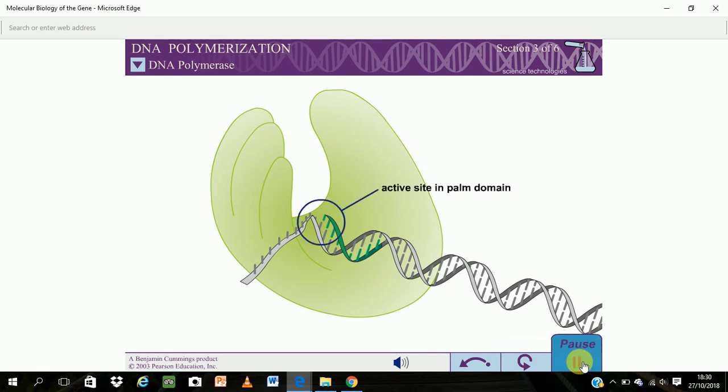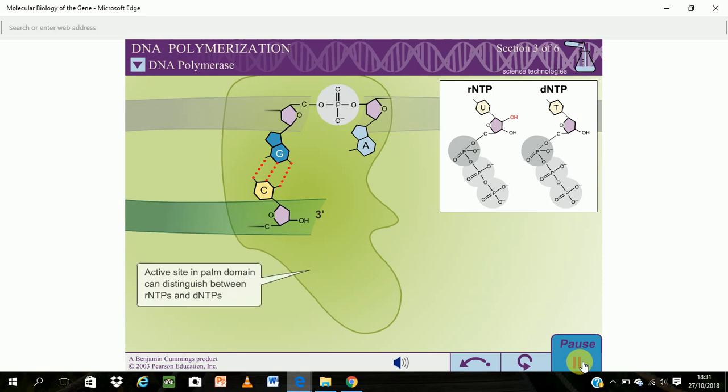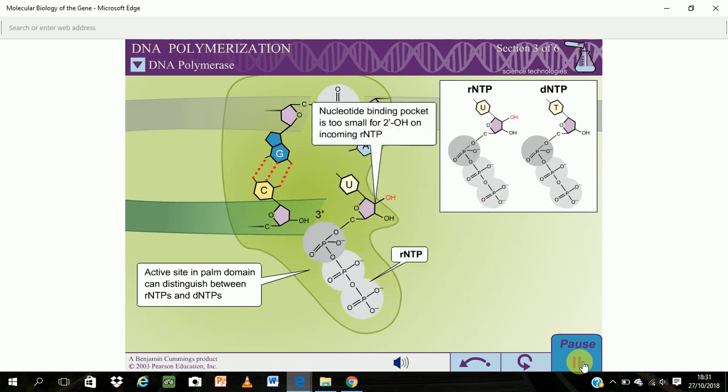The palm domain houses the active site for DNA synthesis. The active site of DNA polymerase is able to distinguish between RNTPs and DNTPs, even though RNTPs are present at approximately 10-fold higher concentration in the cell. The nucleotide binding pocket is too small to accommodate the presence of a 2' hydroxyl on the incoming nucleotide, allowing the polymerase to sterically exclude RNTPs.